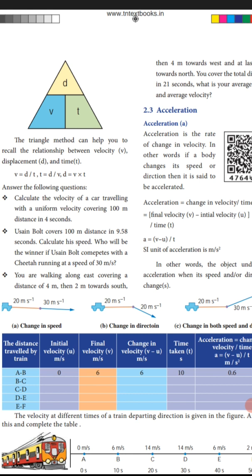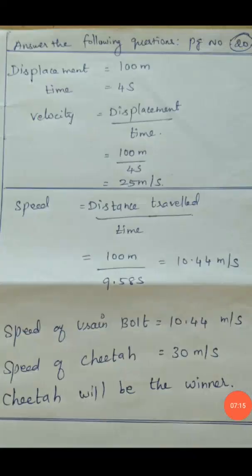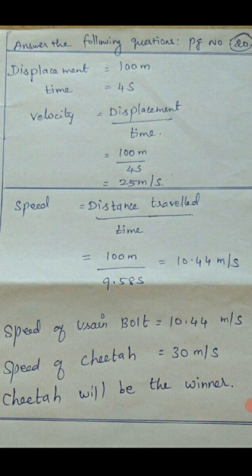Answer the following questions. First question: calculate the velocity of a car travelling with uniform velocity, covering 100 meters in 4 seconds. Displacement is 100 meters, time is 4 seconds. Velocity equals displacement divided by time: 100 divided by 4 equals 25 meters per second.